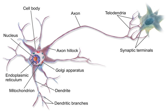In 1937, John Zachary Young suggested that the squid giant axon could be used to study neuronal electrical properties. It is larger than but similar to human neurons, making it easier to study. By inserting electrodes into the squid giant axon, accurate measurements were made of the membrane potential. The cell membrane of the axon and soma contain voltage-gated ion channels that allow the neuron to generate and propagate an electrical signal. Some neurons also generate subthreshold membrane potential oscillations. These signals are generated and propagated by charge-carrying ions including sodium, potassium, chloride, and calcium. Several stimuli can activate a neuron leading to electrical activity, including pressure, stretch, chemical transmitters, and changes of the electric potential across the cell membrane.